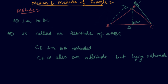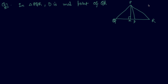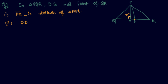Let me give you one example based on this. In triangle PQR, D is the midpoint of side QR. The first part asks what PM is — since this angle is 90 degrees, PM is the altitude of triangle PQR. The second part asks what PD is — since D divides QR into equal parts, PD is the median of triangle PQR.